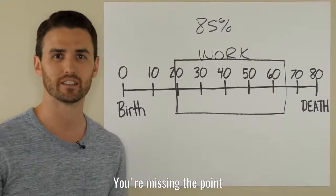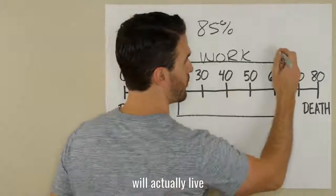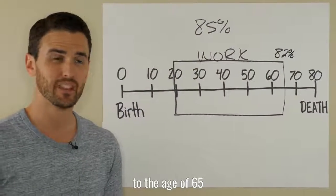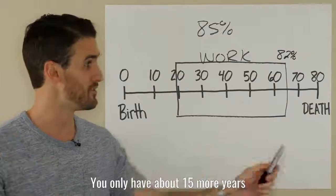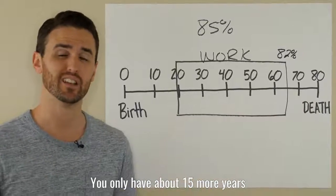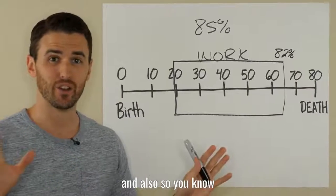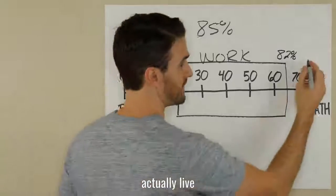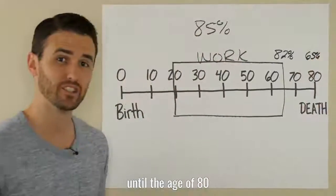Because only 82% of people in the world will actually live to the age of 65. And if you get to 65, on average, you only have about 15 more years left to live after you retire. And also so you know, only 65% of people actually live into the age of 80.